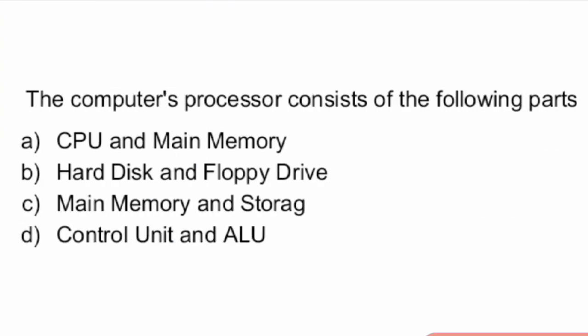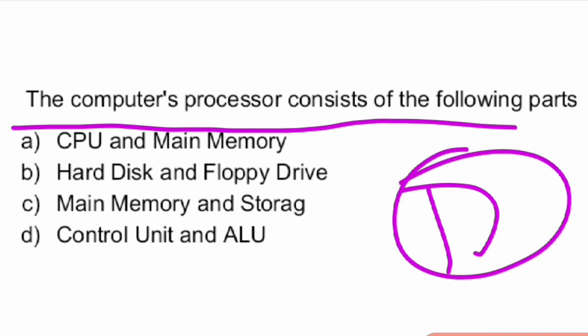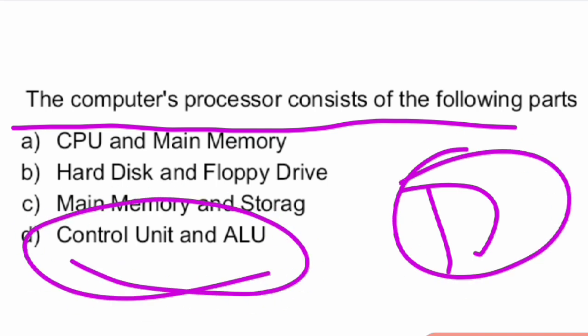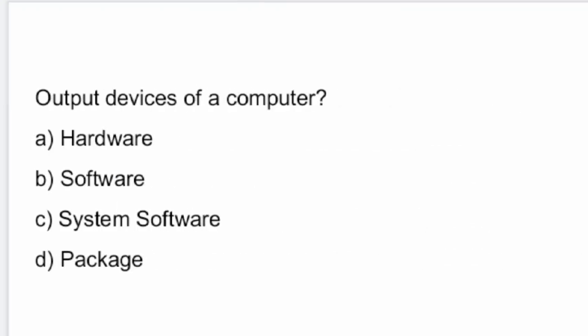Next question: the computer's processor consists of the following parts. The computer processor consists of the following parts. The answer is Control Unit and ALU — option D is the right answer. Control Unit and ALU, that is, the Arithmetic Logic Unit.